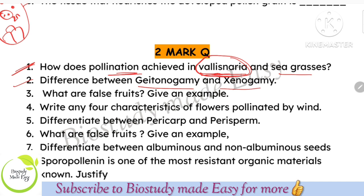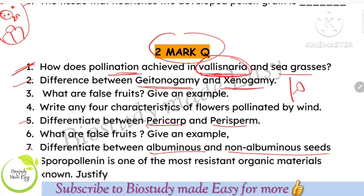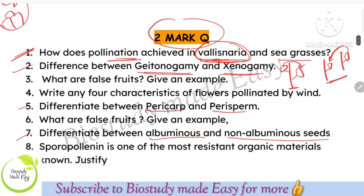Differences between geitonogamy and xenogamy — very very important. Two marks. Geitonogamy means pollination between different flowers of the same plant — no genetic variability because it's the same plant. Xenogamy means pollination between different plants — there will be genetic variability because different plants are involved. Write these two points as your answer.